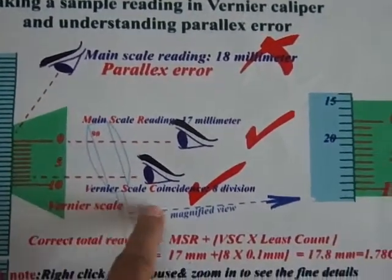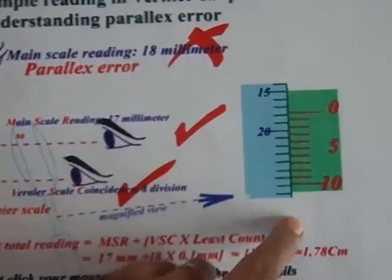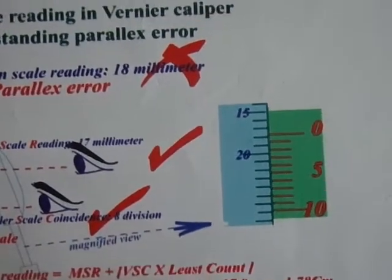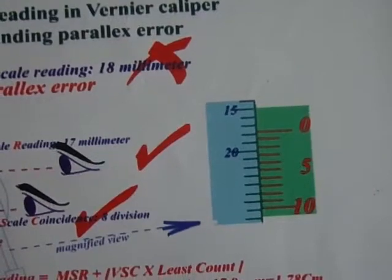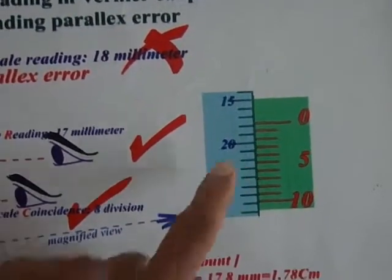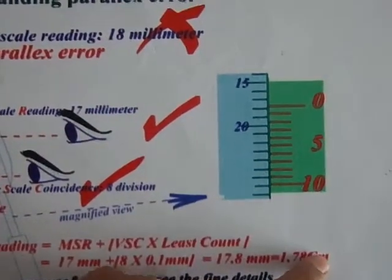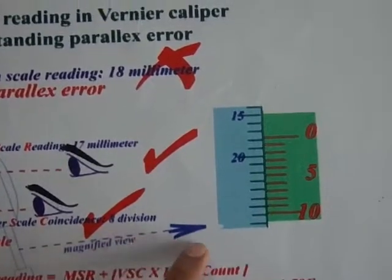So the magnified view is shown here. Say in this case the main scale reading shows 17 divisions it has crossed and the Vernier Constant is 8th division.